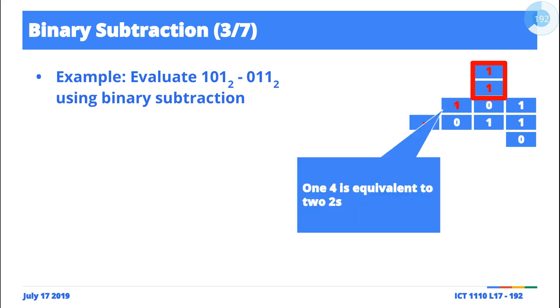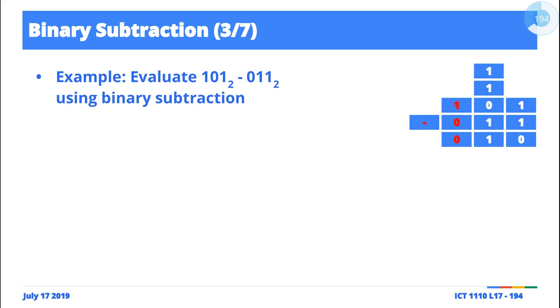We've effectively destroyed it, so it doesn't exist anymore. So we have a zero here, and then we'll have a zero, and then we have our answer, which is two. It is pretty straightforward. Yes, it's two: ones place, twos place.